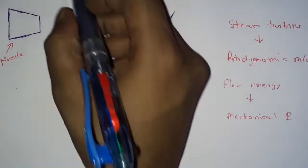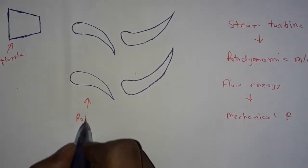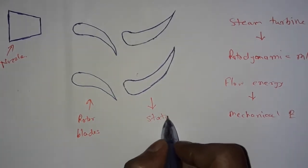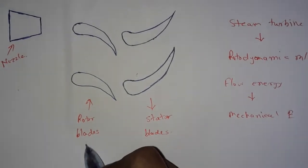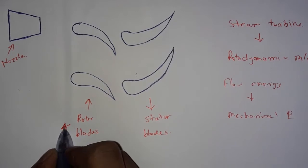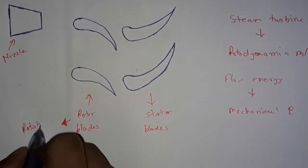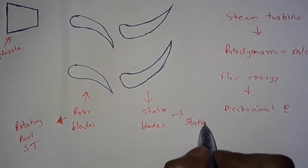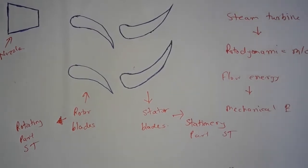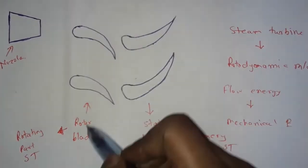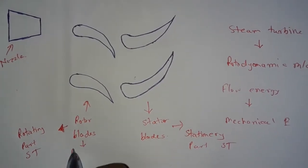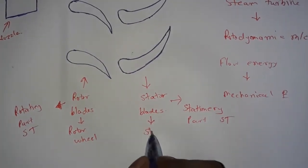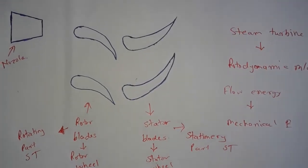These are the rotor blades, and these are the stator blades. The rotor is the rotating part of the steam turbine, and the stator is the stationary part. The rotor blades are on the rotor wheel of the steam turbine, and the stator blades are on the stator wheel, which is stationary.